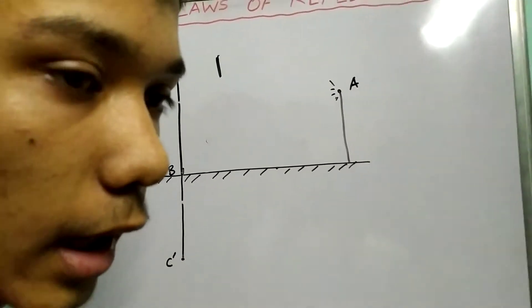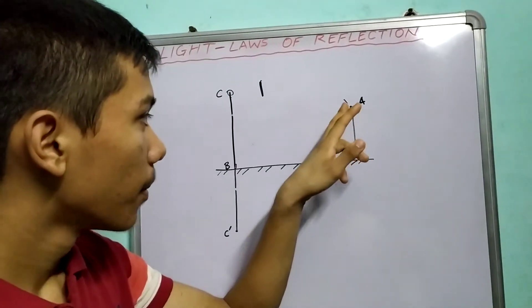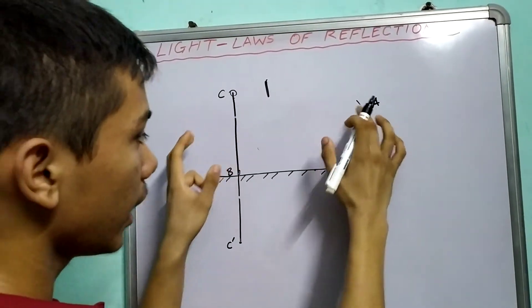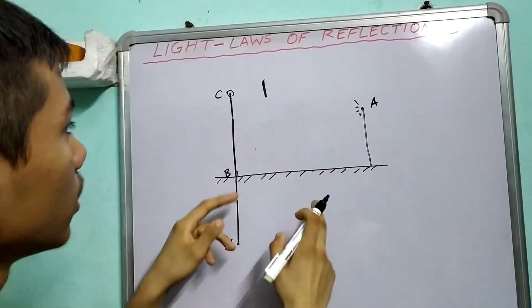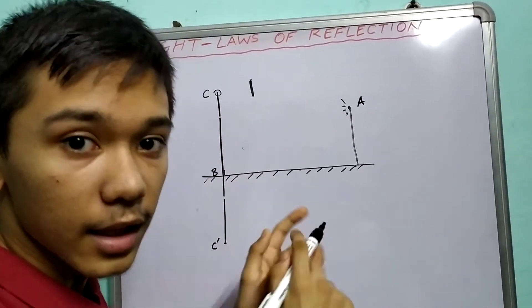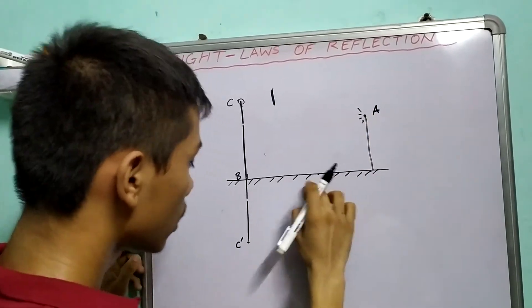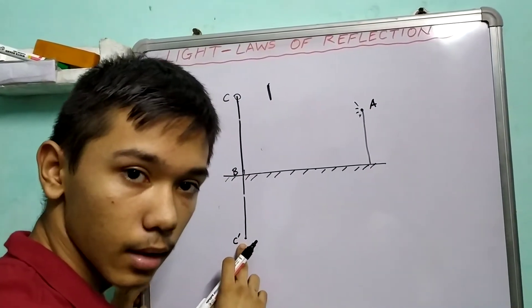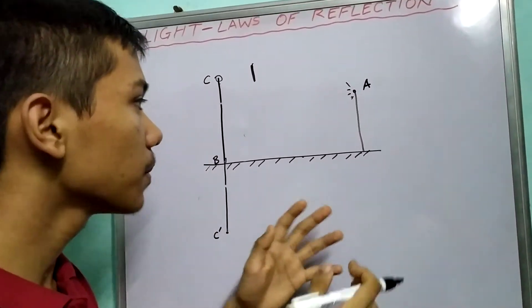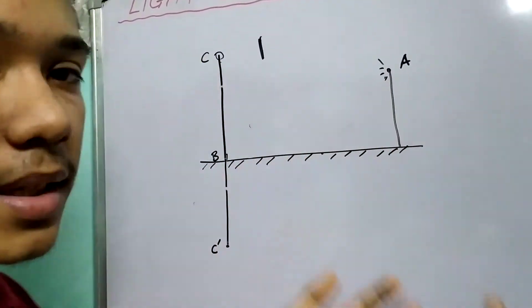Now, here's what I want you to realize. Light will go from A to this point O and then to C. This path is equivalent to light taking the path A to O to C dash. Why? Because, see, the medium doesn't change.